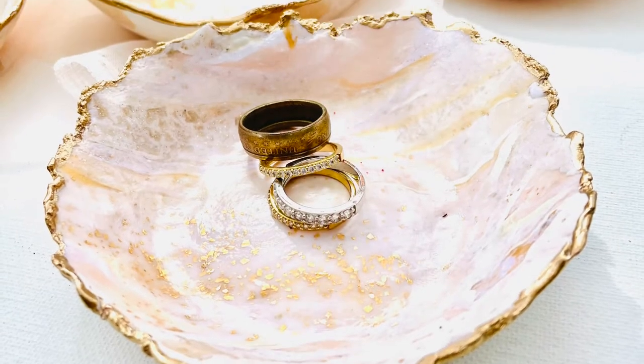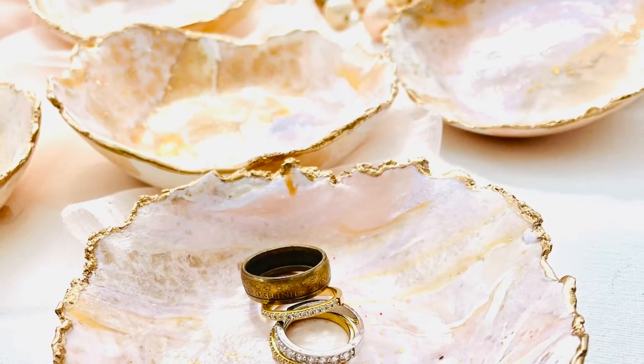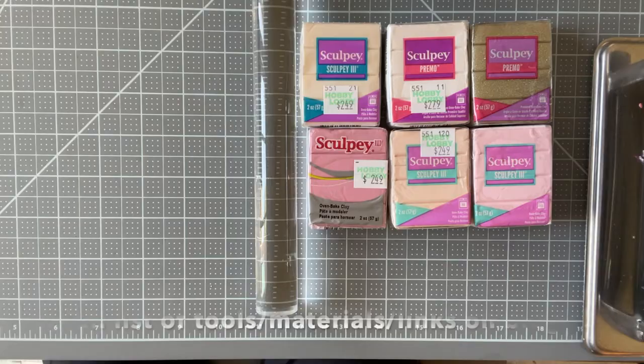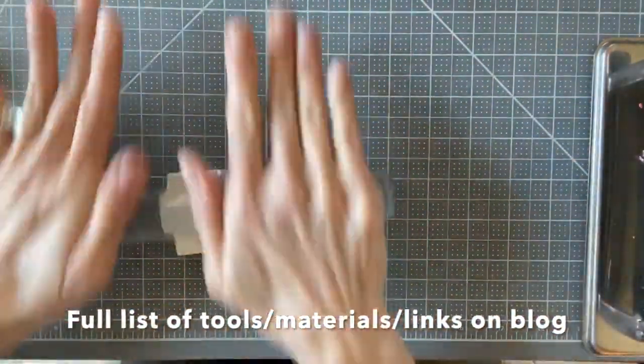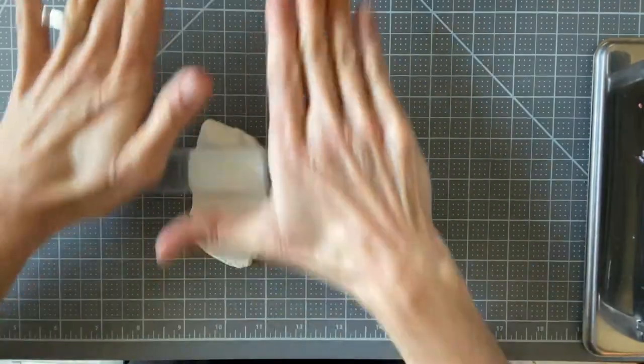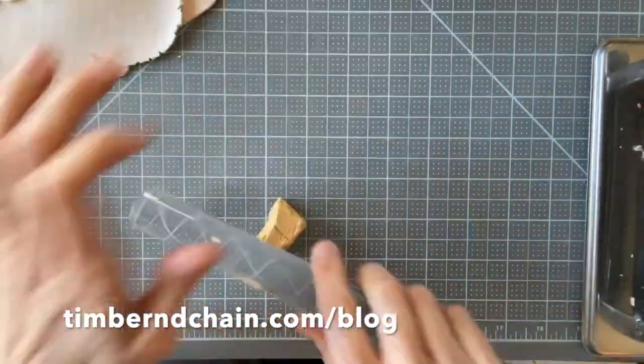My color palette for these little bowls includes various shades of whites, golds and pinks. A full list of everything I use including the clay colors, tools, and materials is available on my blog along with their links for purchase.